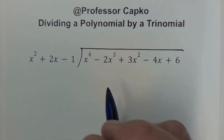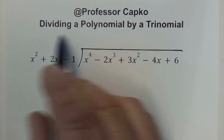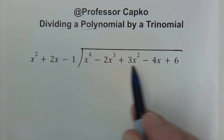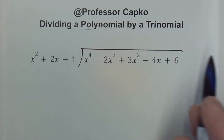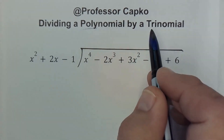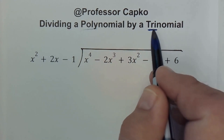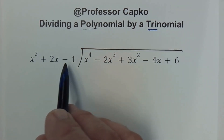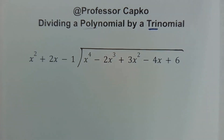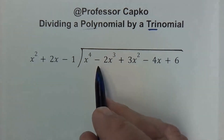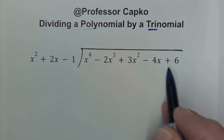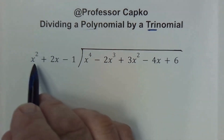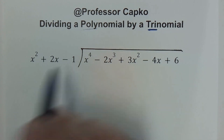In today's video we're going to divide a polynomial — poly just means many terms, and this is our polynomial, it's got many terms — by a trinomial. That's something that has three terms; each term is separated by a plus or minus sign, just like in the polynomial. Tri means three, so we have three terms here.